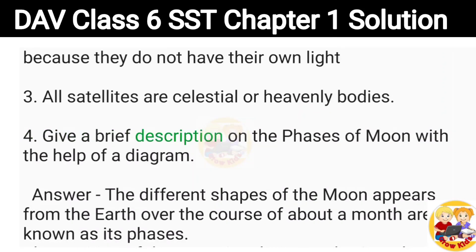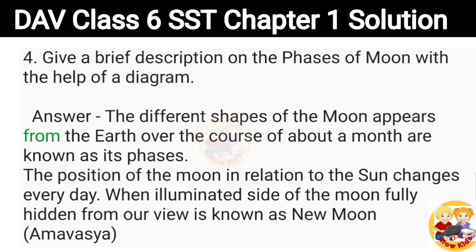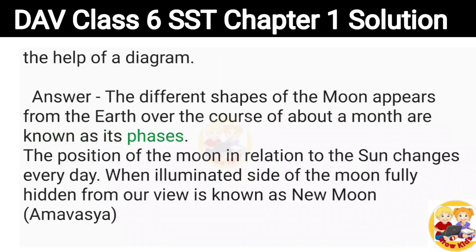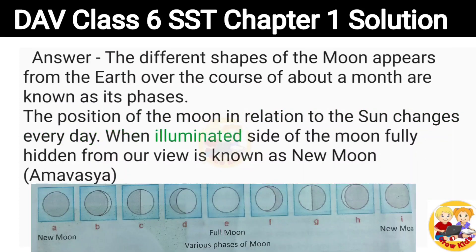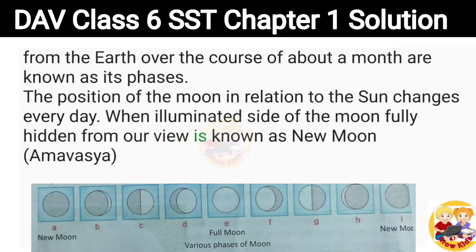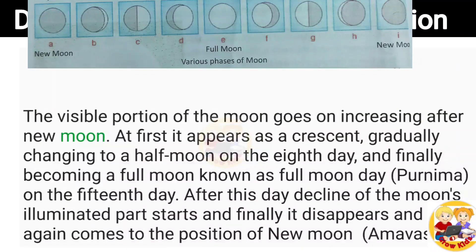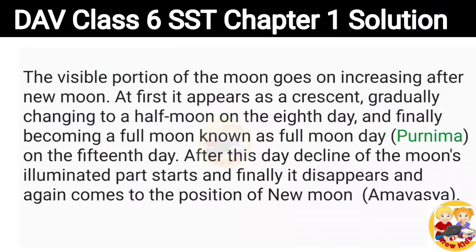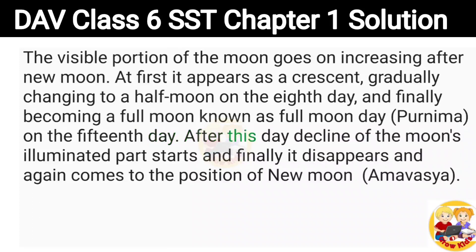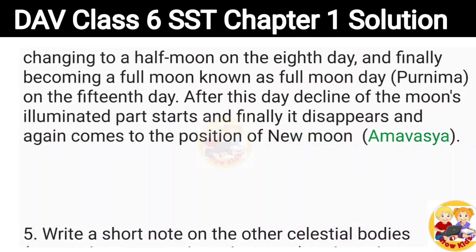4. Give a brief description on the phases of Moon. Answer: The different shapes of the Moon as seen from the Earth over the course of about a month are known as its phases. The position of the Moon in relation to the Sun changes every day. When the illuminated side of the Moon is fully hidden from our view, it is known as New Moon (Amavasya). The visible portion goes on increasing after New Moon — first appearing as a crescent, then a half Moon on the 8th day, and finally becoming a full Moon (Purnima) on the 15th day. After this, the illuminated part declines and finally disappears, returning to New Moon.